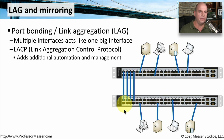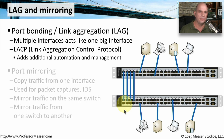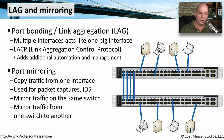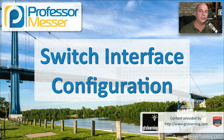You may also want to enable Link Aggregation Control Protocol, or LACP, which adds configuration management functionality between the switches to handle the LAG connection more effectively. If you need to troubleshoot traffic on your switch, you can take advantage of port mirroring — this takes any traffic going in and out of an interface and sends a copy to a protocol analyzer. It's used for intrusion detection systems, protocol analysis, or any situation where you need to capture raw data on the network, and some switches support mirroring across multiple switches.